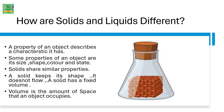Solids share similar properties. A solid keeps its shape. It does not flow. A solid has a fixed volume. Volume is the amount of space that an object occupies.